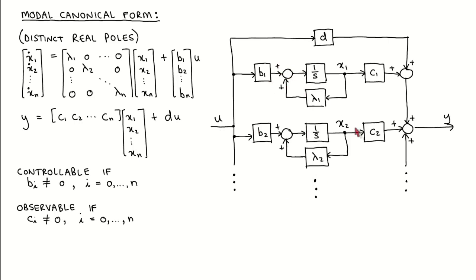The system is observable if all the output gains of the modes are non-zero. If the output gain of one mode is zero, that mode makes no contribution to the output and the system is not observable. Observability means that the outputs of all modes contribute to the system output, so the output can be used to reconstruct all the states. The system must be both controllable and observable to enable design of a state variable compensator, and these properties are therefore vital to analyze before attempting to control the system.